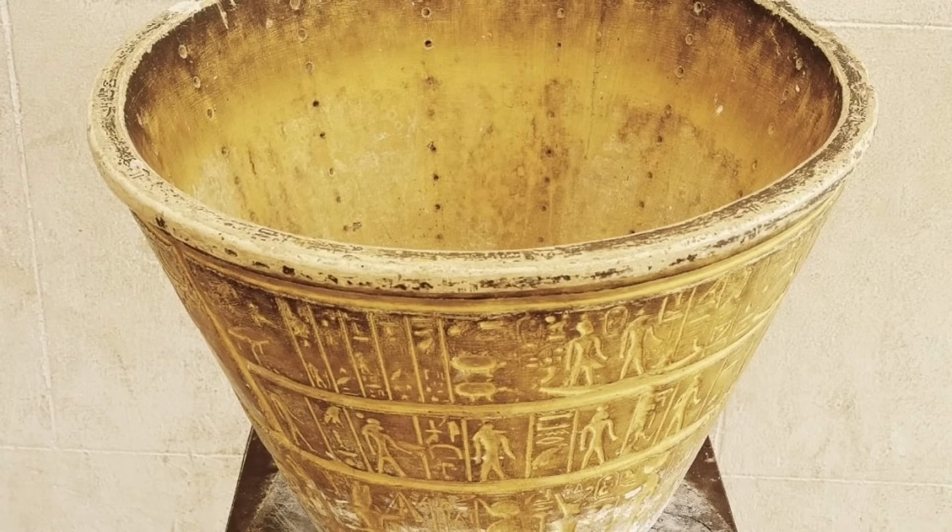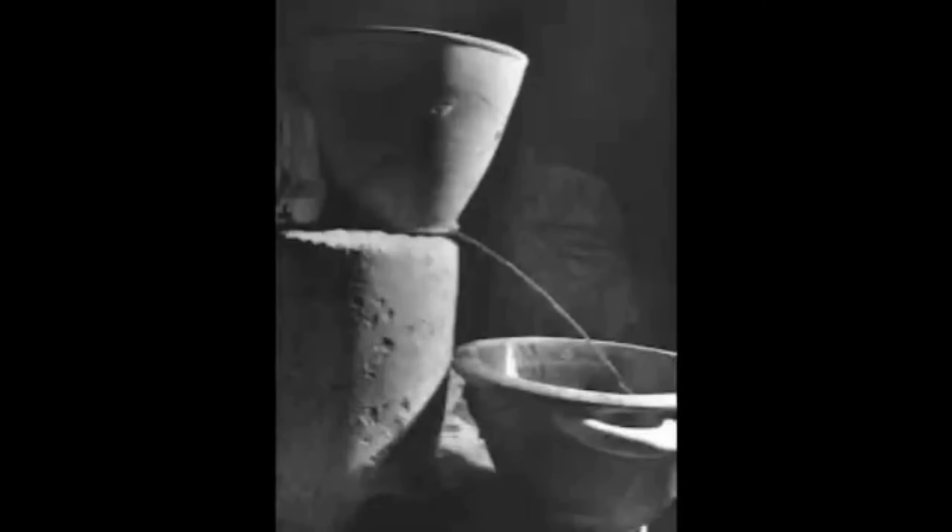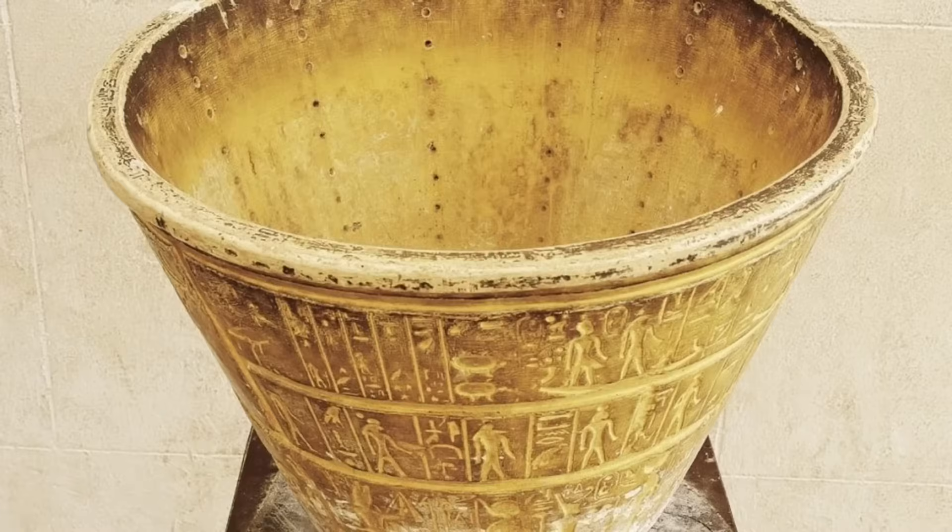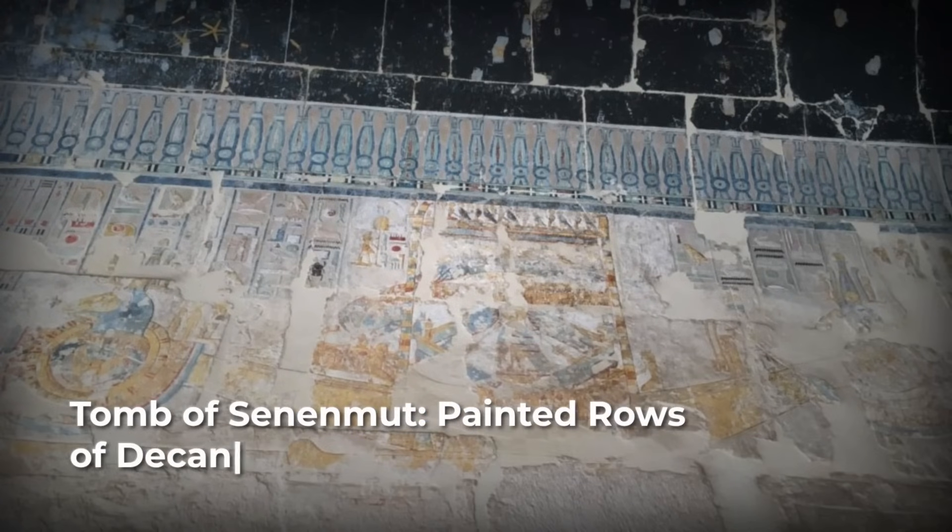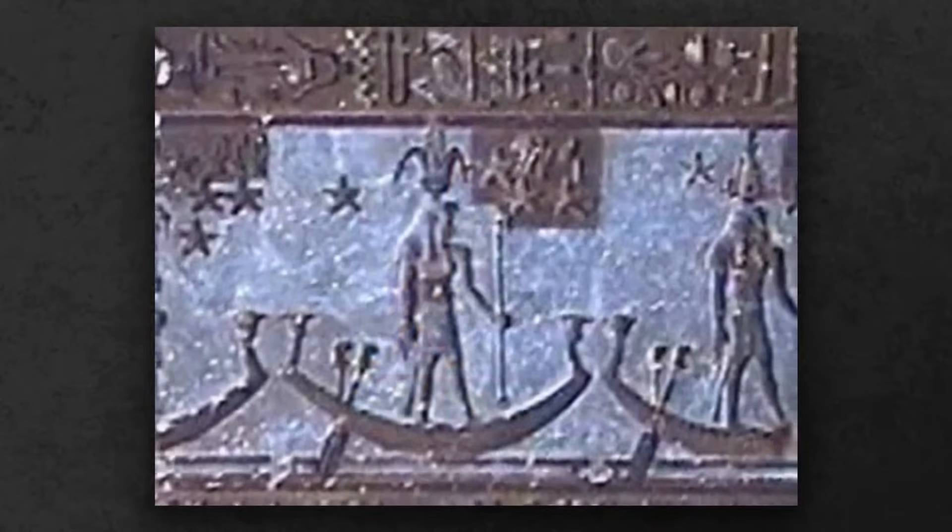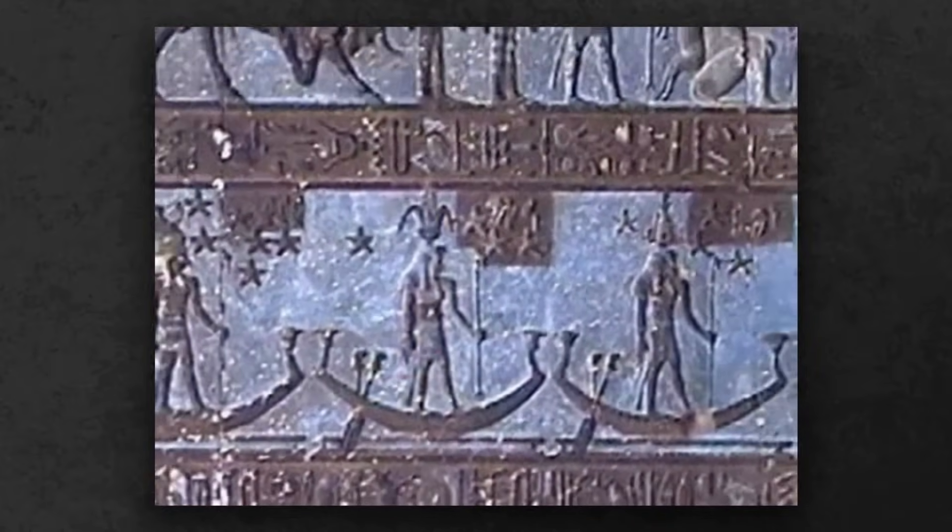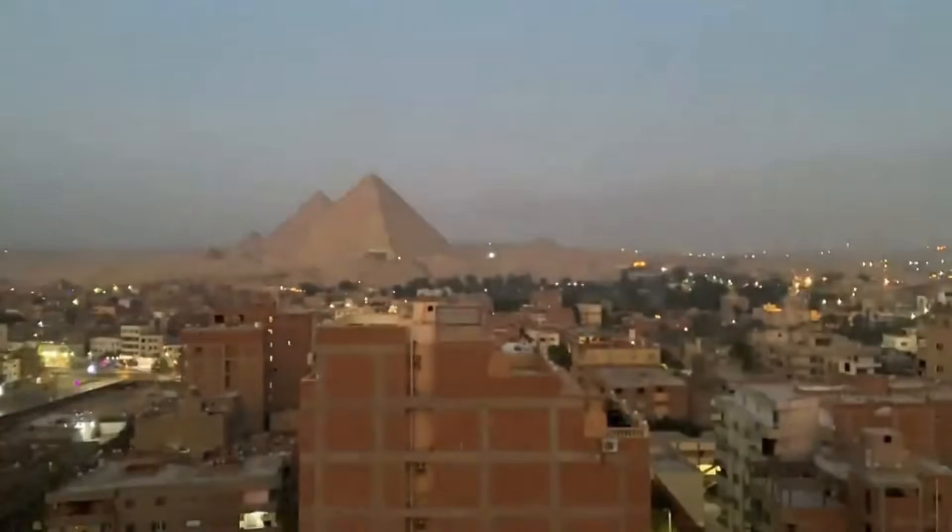To track the hours, Egyptians used water clocks, clepsydras, where a steady drip marked the passing of time. Some ceilings in royal tombs, like that of Senenmut, are painted with rows of decans and star clocks, a permanent record of how the heavens ordered the night.